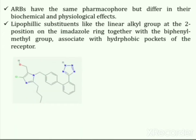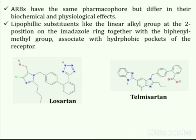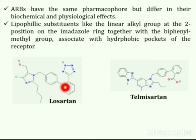Almost all of the angiotensin receptor blockers have the same pharmacophores, so the difference in their biochemical and physiological effects arises because of different substituents attached to the basic skeleton. Lipophilic substituents like the linear alkyl group at the second position of the imidazole ring, together with the biphenyl methyl group, combinedly bind with the hydrophobic pockets of the receptor. A hydrophobic pocket is a binding site that contains mostly hydrophobic amino acids.